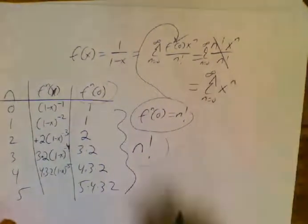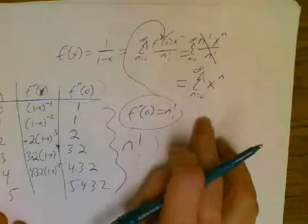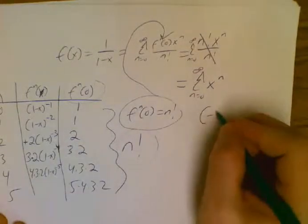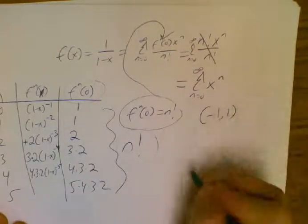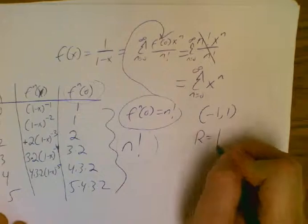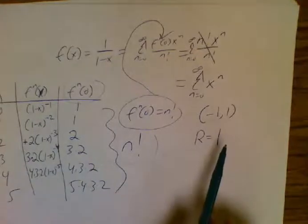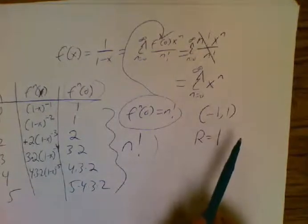This was simply just x to the n. And the only problem with this is there is a restriction that x needs to be between negative 1 and 1. My radius of convergence is 1, my interval of convergence was negative 1 to 1.